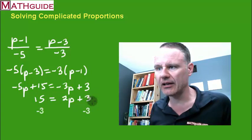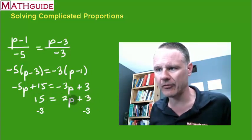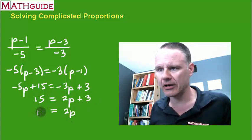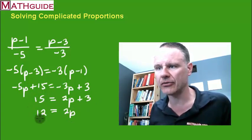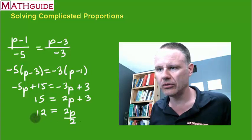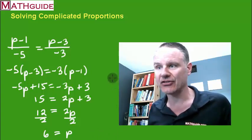Now to get rid of this 3 I'm going to subtract 3 from both sides. So if I subtract 3 I get 12. 15 minus 3 is 12. Okay now we're going to divide both sides by 2. So if I divide it by 2 I get 6. And there you have it. That is the answer to the problem.